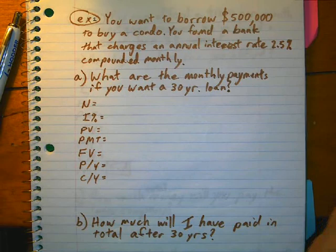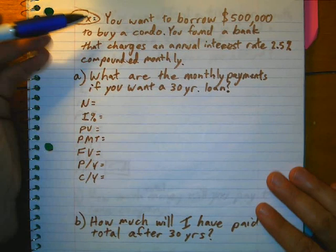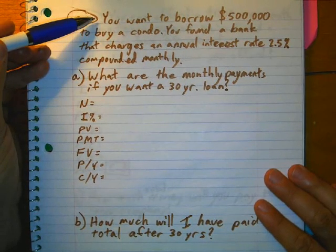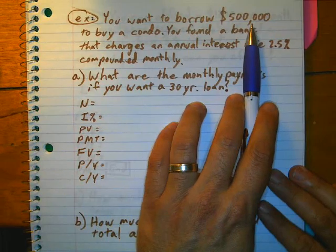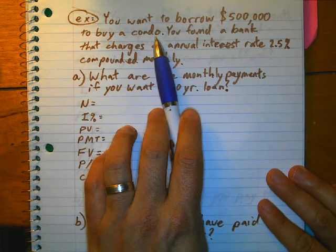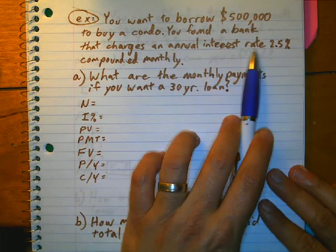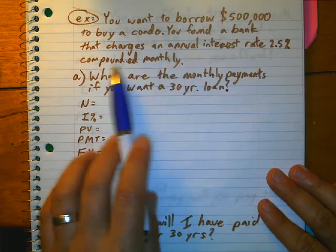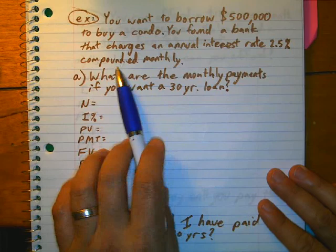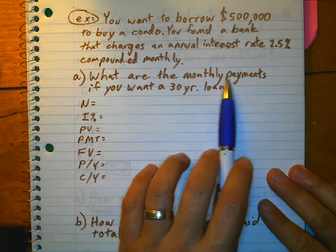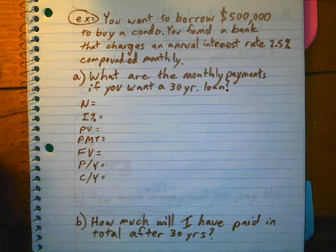Your family wants to buy a condo, and they want to borrow half a million dollars for this condo. You've found a bank that's going to charge 2.5% interest rate, and it's compounded monthly. What are the monthly payments going to be for this 30-year loan?